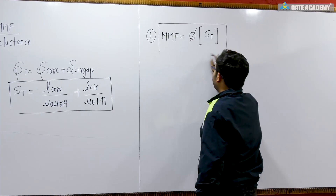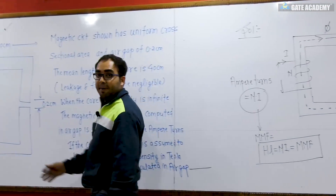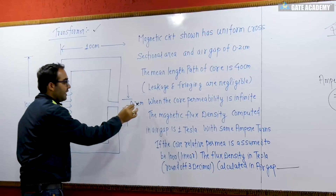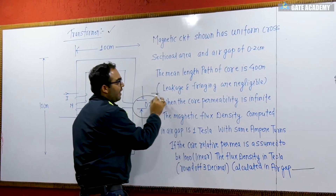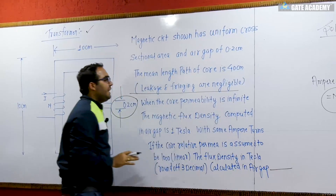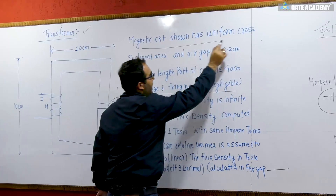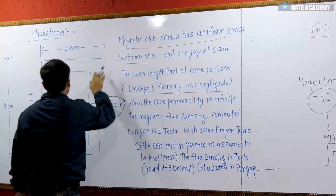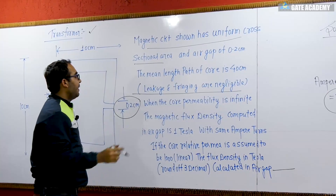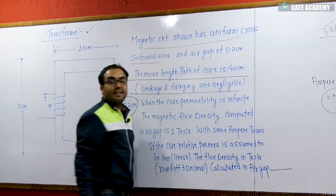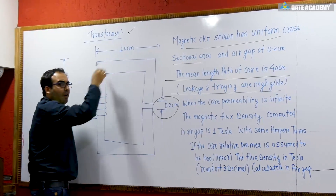Now let's read the question. You can see the transformer is here; there is an air gap of 0.2 cm. The leakage and fringing are negligible. It has a uniform cross-sectional area — meaning the cross-sectional area is the same throughout. The total periphery is 40 cm, with 10 cm on each side.